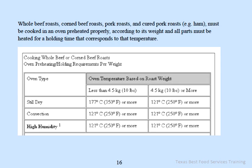Whole beef roasts, corned beef roasts, pork roasts, and cured pork roasts such as ham must be cooked in a properly preheated oven, based on weight, with all parts heated for the required holding time. Two oven types apply — still dry and convection. For still dry ovens: less than 10 pounds requires 350 degrees; more than 10 pounds requires 250 degrees. For convection ovens: 250 degrees regardless of weight.